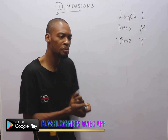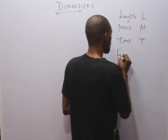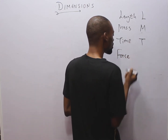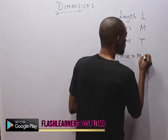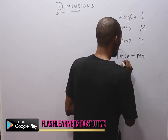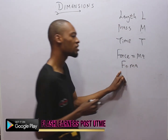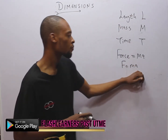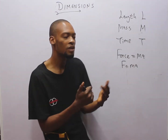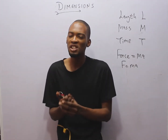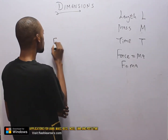A good example of a derived quantity is force. Force is derived from fundamental quantities. Force equals mass times acceleration — F = ma — meaning force equals mass times acceleration. This is from Newton's second law, which states that the rate of change of momentum of a body is proportional to the force applied.